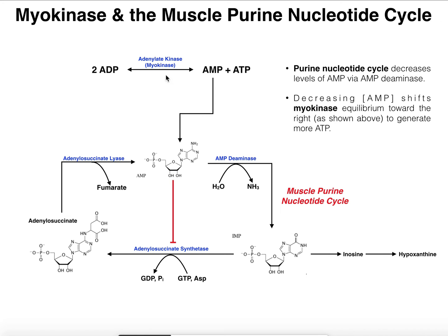Let's think about this according to Le Chatelier's principle, because the myokinase reaction is an equilibrium reaction. If a product — AMP — is decreasing in concentration, the equilibrium is going to shift more to the right. That's going to produce more AMP, but what is it also going to produce more of? ATP. So this half of the cycle — AMP deaminase and then IMP degradation — clears some of the adenosine monophosphate, converting it to IMP and degrading it, so AMP levels won't exponentially increase. That decrease in AMP causes the myokinase reaction to shift right and produce more ATP.